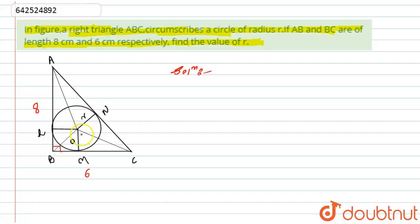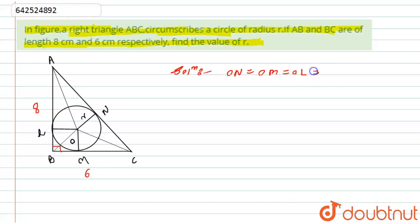If you look at the figure, ON, OM, and OL are all radii of the circle. So from here I can say that ON = OM = OL = r. Let this be equation number one.